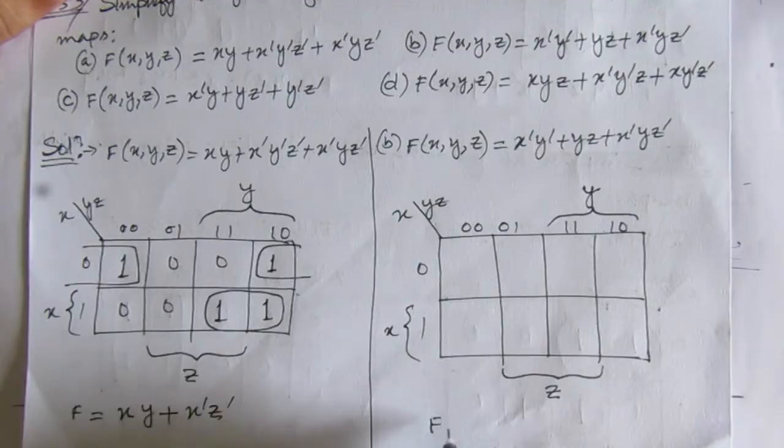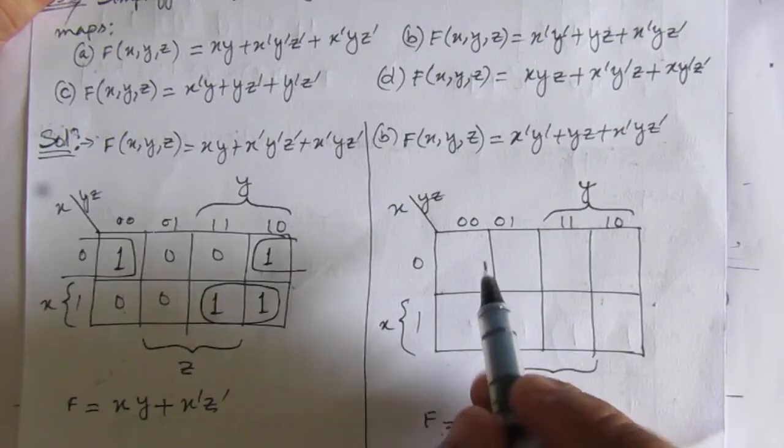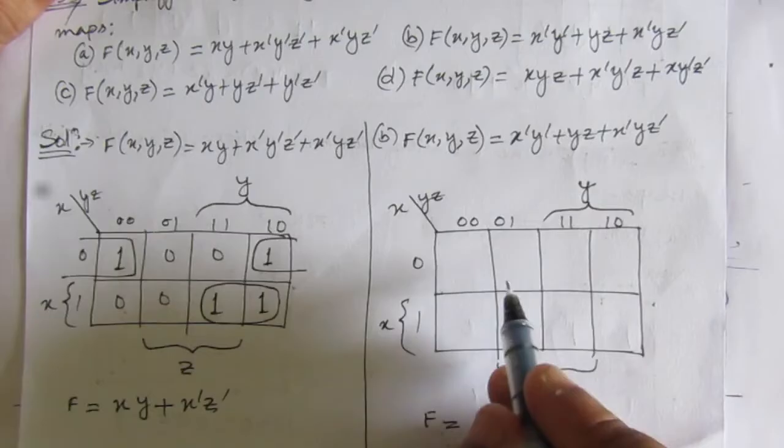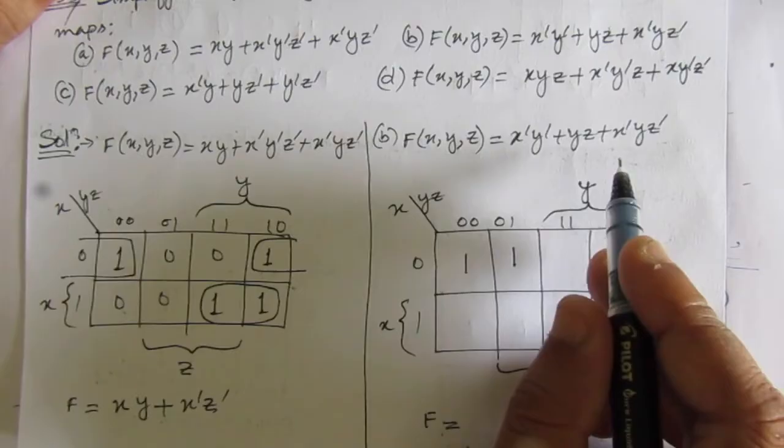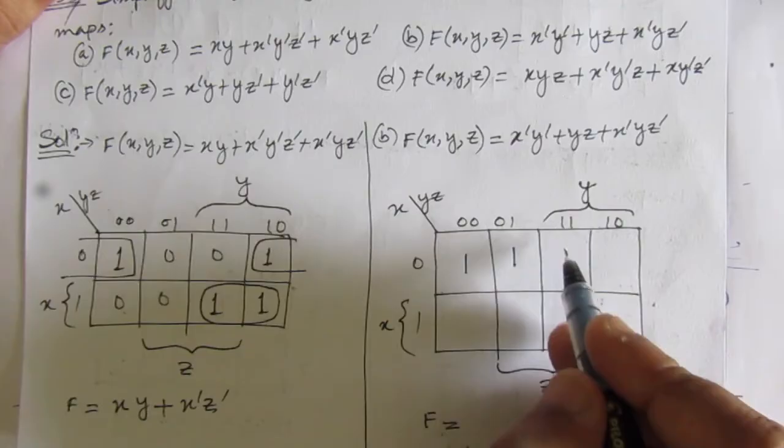Now for the second problem, we have x̄ȳ. x bar is this row and ȳ corresponds to these two columns, so we put 1 and 1 there. Then for the term yz: y is 1 and z is 1, meaning we find the common columns where both y and z equal 1. Only these two boxes satisfy that condition, so we put 1 and 1.